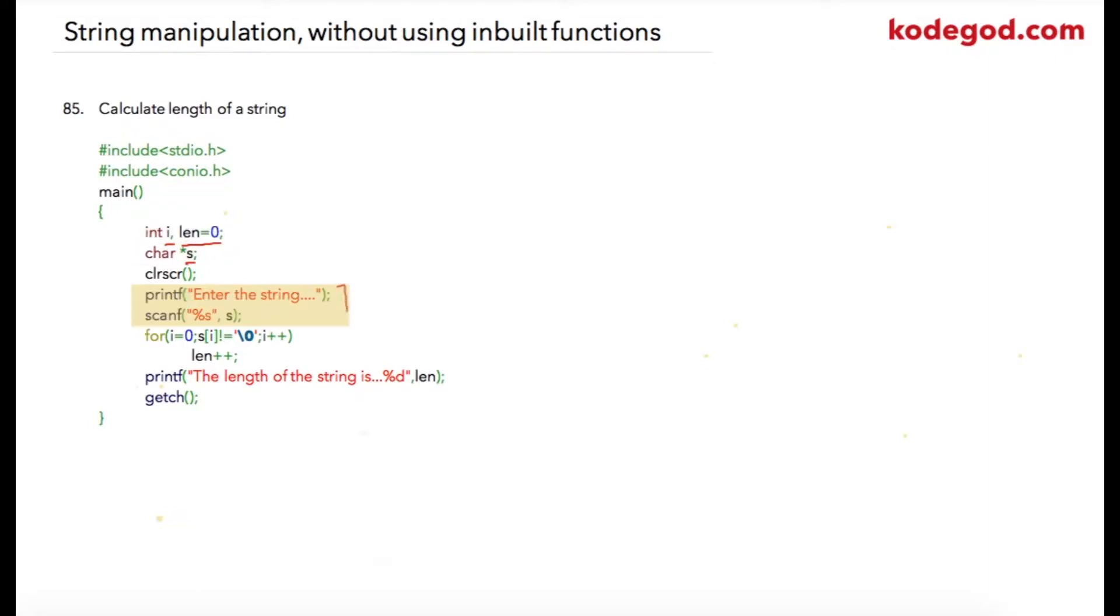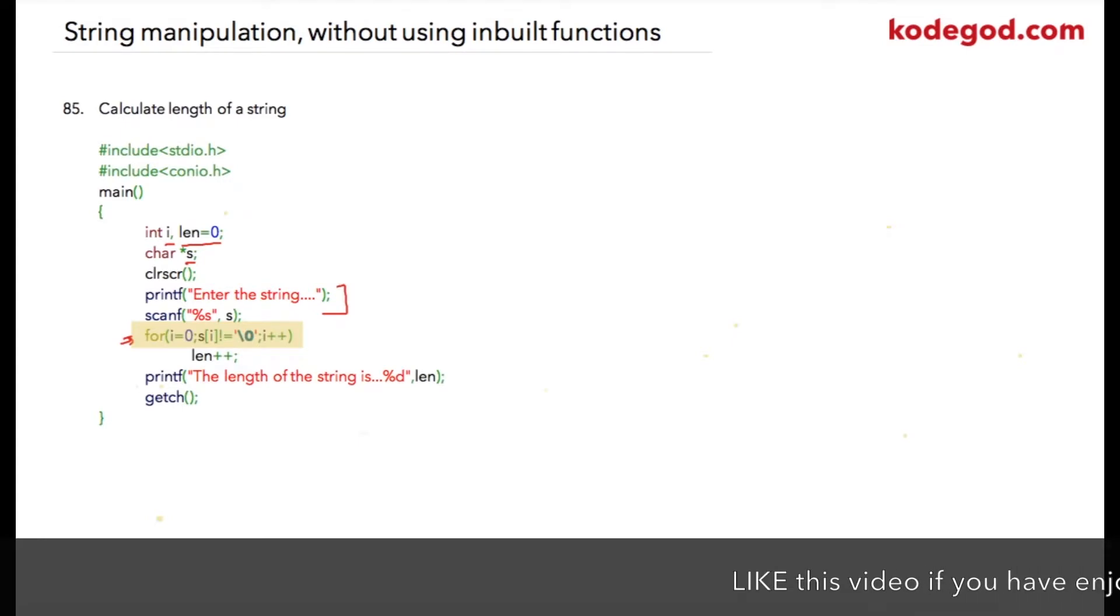I am asking user to enter the string, and then I am going to loop through the string using a standard for loop, starting from zero till I reach the slash zero character, which is the null character.